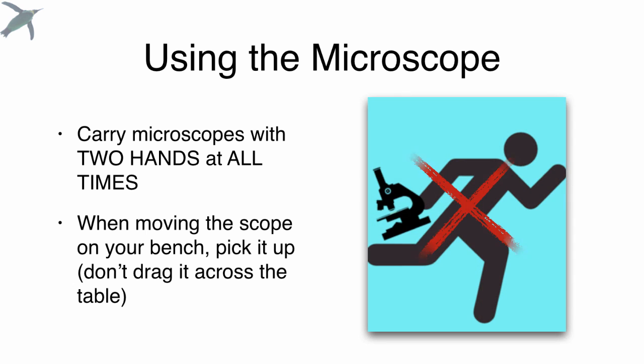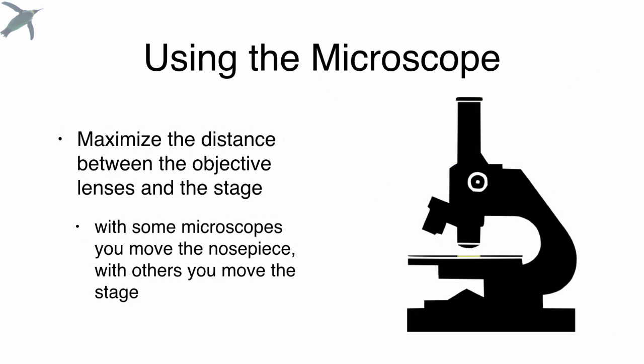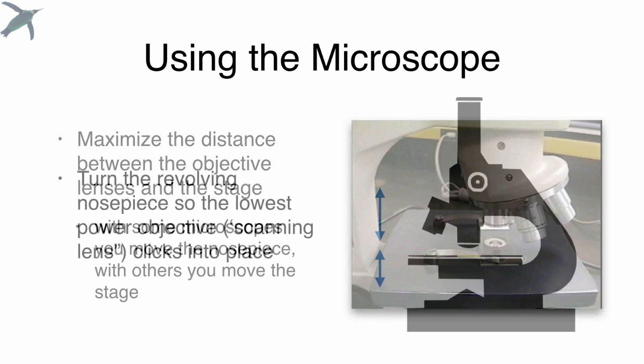When you use the microscope, please always use both hands when you carry it. Even when you move it around on the table on your lab bench, go ahead and pick it up. Don't drag it across the table. It makes that horrible bouncing sound, and that's probably the condenser getting out of alignment. When you sit down to use it and you plug it in, the first thing that you want to do is maximize the distance between the objective lens and the stage. Some scopes, you will move the nose piece up and down with respect to a fixed stage, and other microscopes, you actually move the stage up and down against a fixed nose piece. Either way, you want to increase that distance between those two when you're getting started.